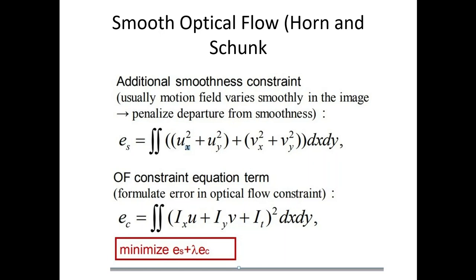If we take u, differentiate it with respect to x, then square it, and differentiate it with respect to y and square it, and do the same for v, the derivative has to be small because the flow is smooth and the change is small. That is called the smoothness constraint. Using this constraint we formulate a new minimization function including the brightness constraint EC and the smoothness constraint ES. Here lambda is the weighting factor — the bigger the weighting factor, the more the brightness constancy constraint is satisfied.